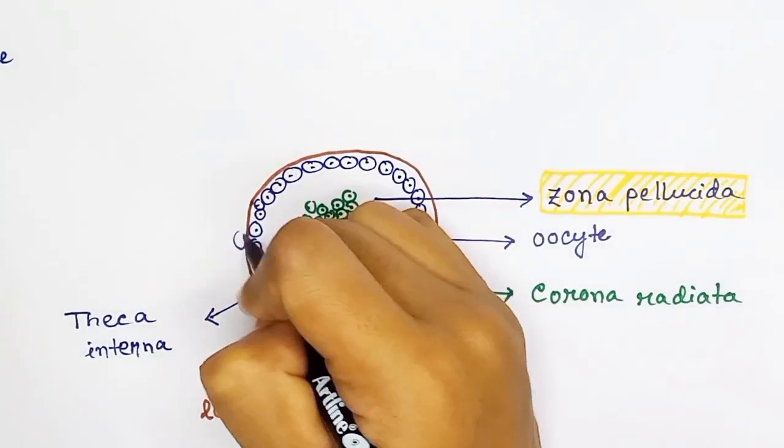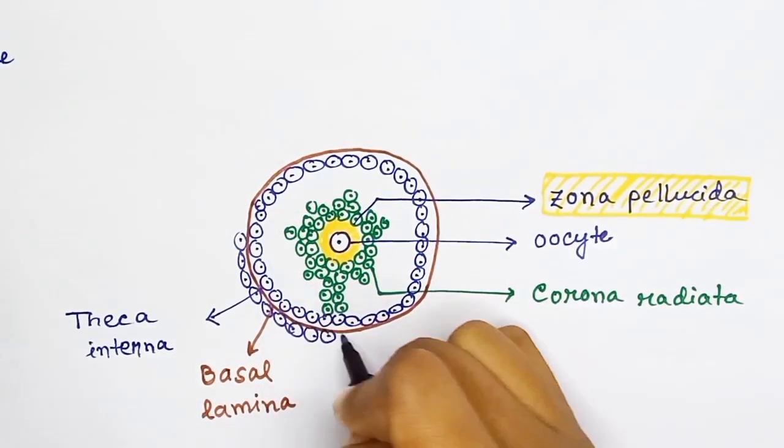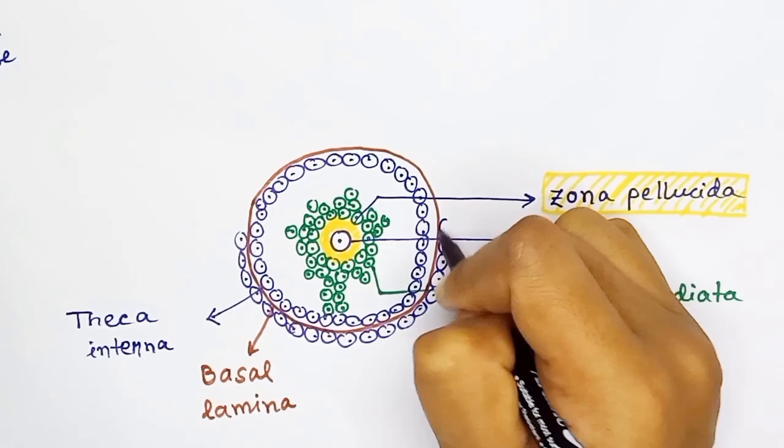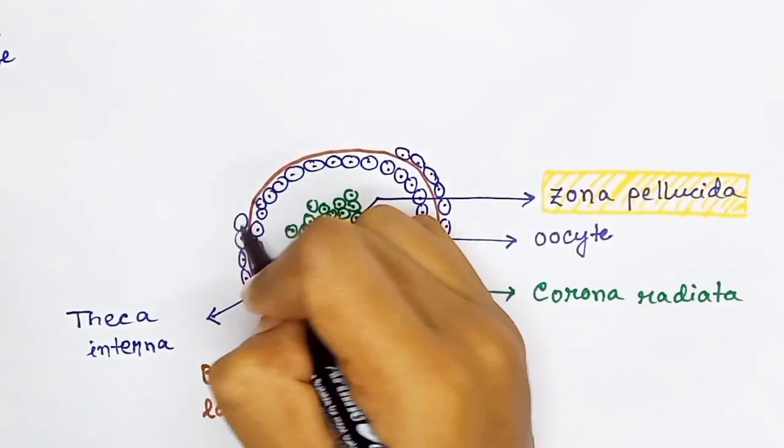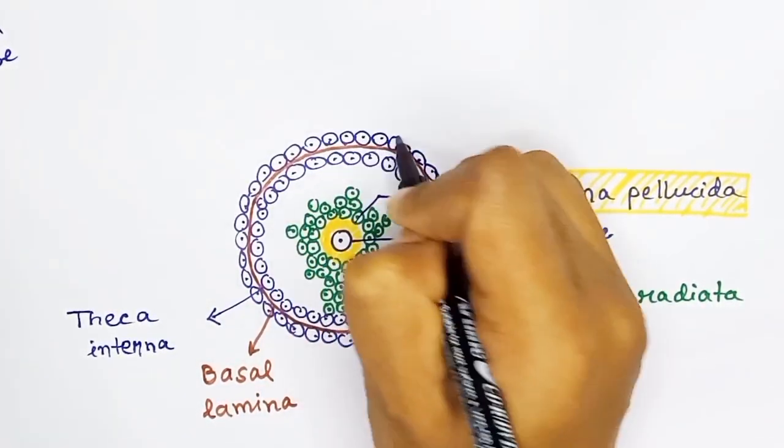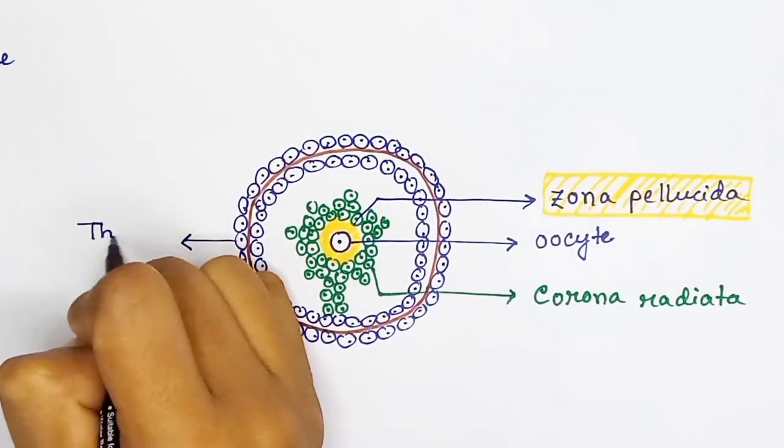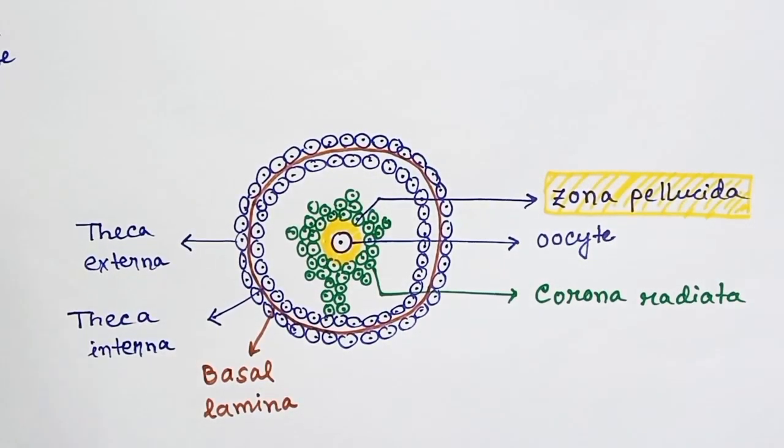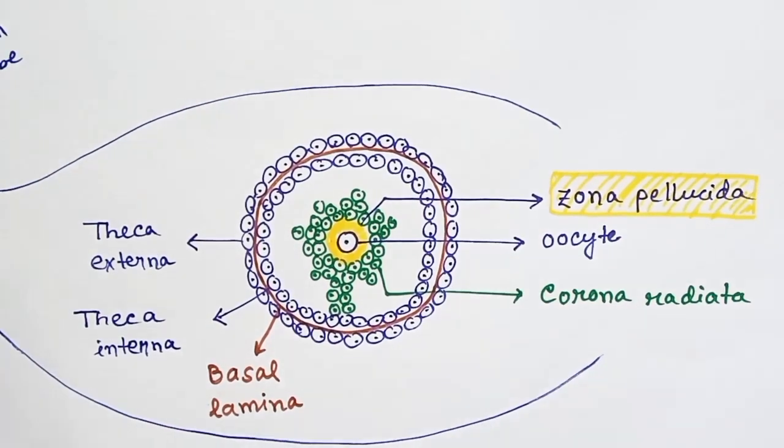Outside basal lamina, another theca layer is present. This layer is called theca externa. Theca interna and theca externa collectively make the theca layer of the follicle. This Graafian follicle, the most mature follicle, is present inside the ovary.